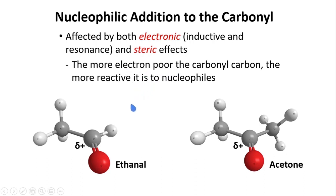If we are to compare ethanal and acetone, ethanal has only one methyl group. The carbonyl carbon is partially positive, and the approach of a nucleophile depends on the intensity of this positive charge. A methyl group is known to donate electrons by hyperconjugation. This donation can reduce the intensity of this positive charge.